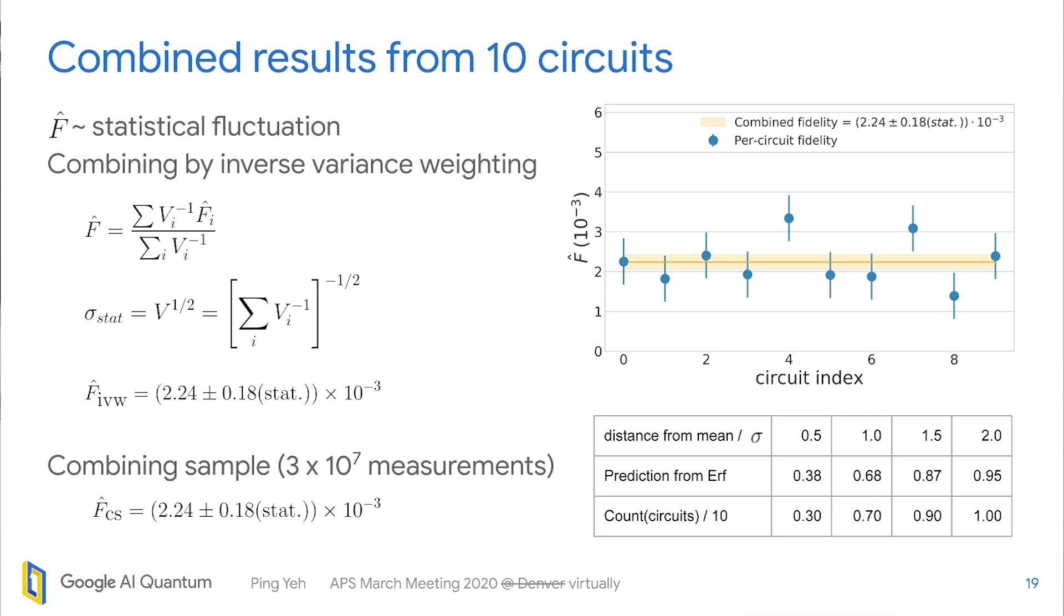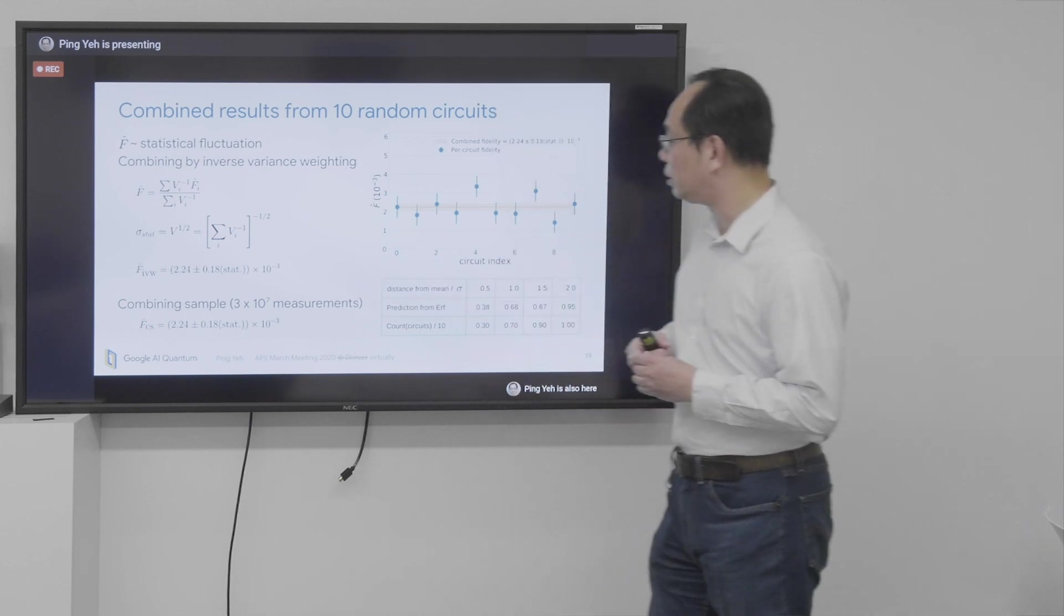Now we have more than one random circuit. We have 10 of them. So we can combine them. And we use two different ways of combining them. And we get basically identical results.